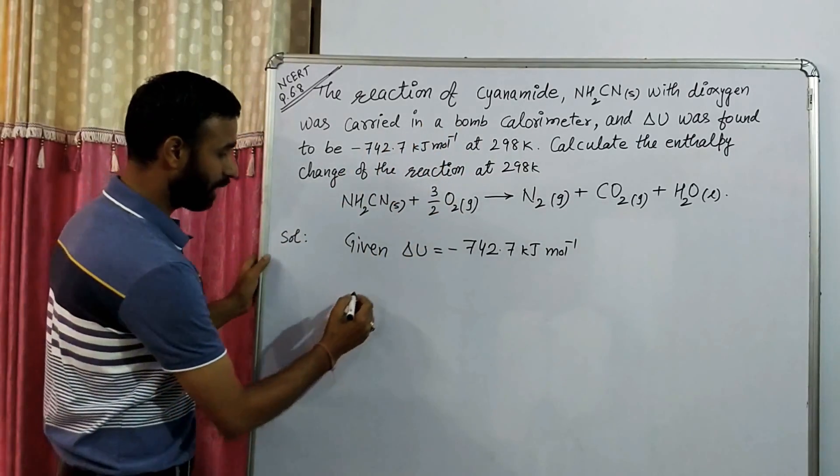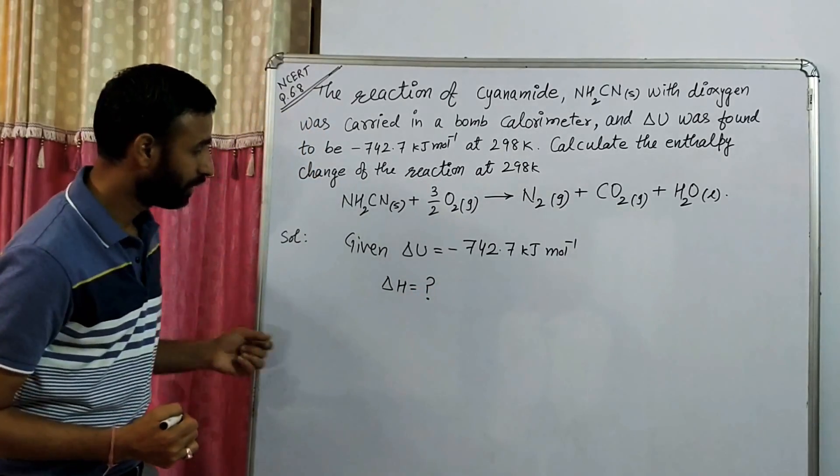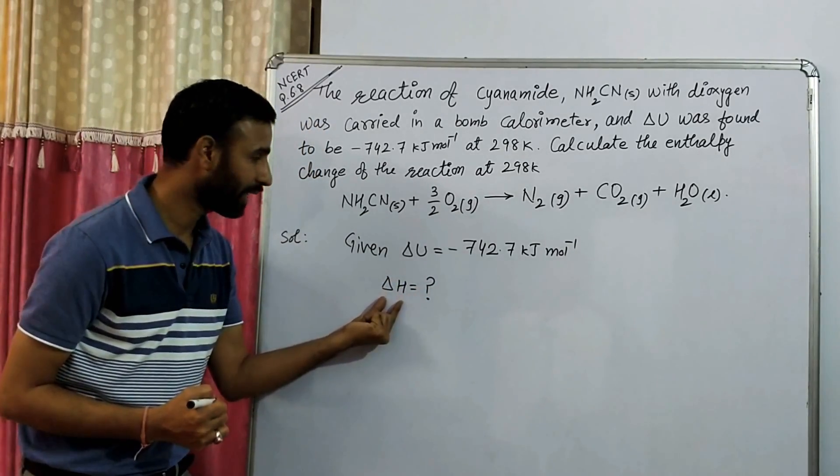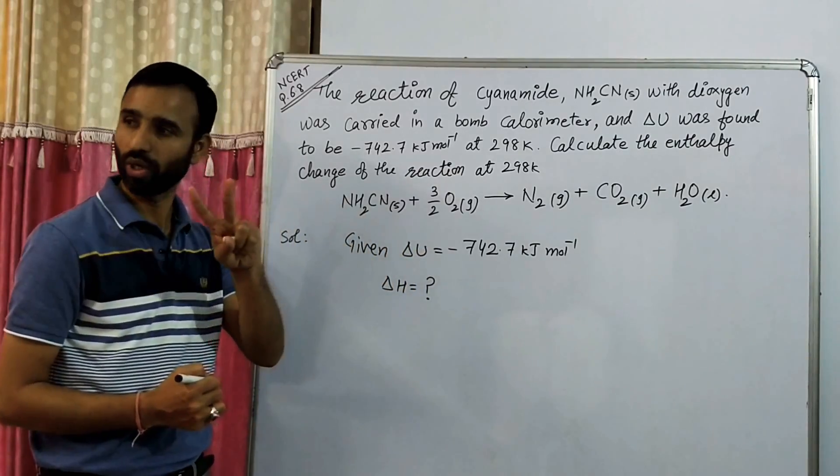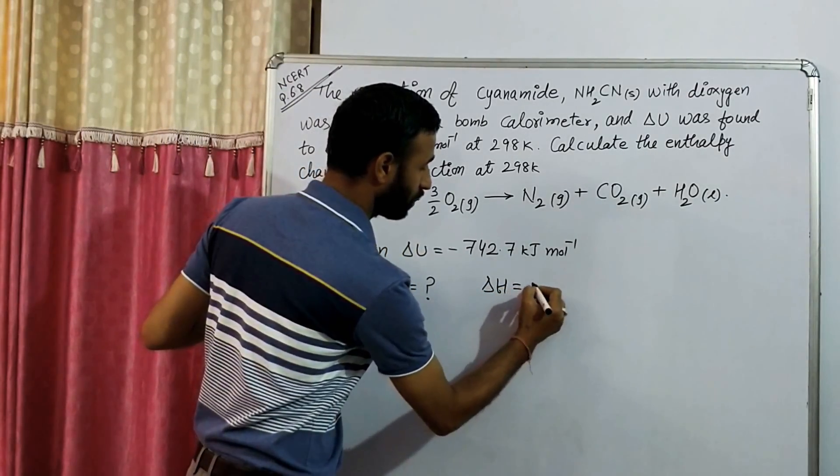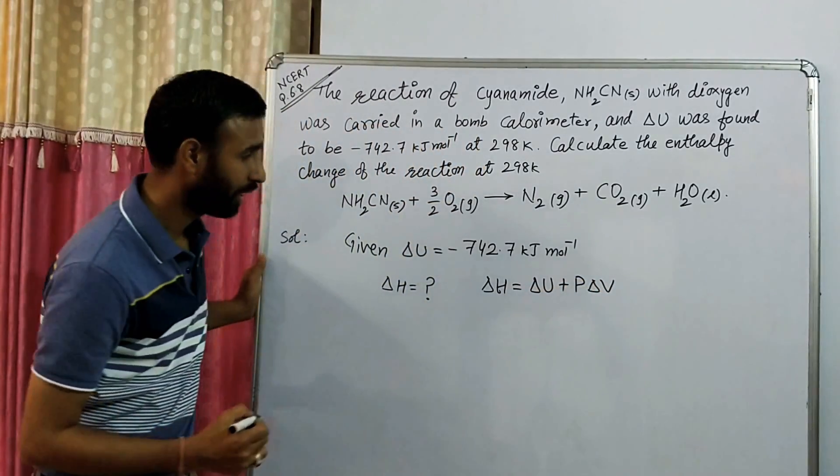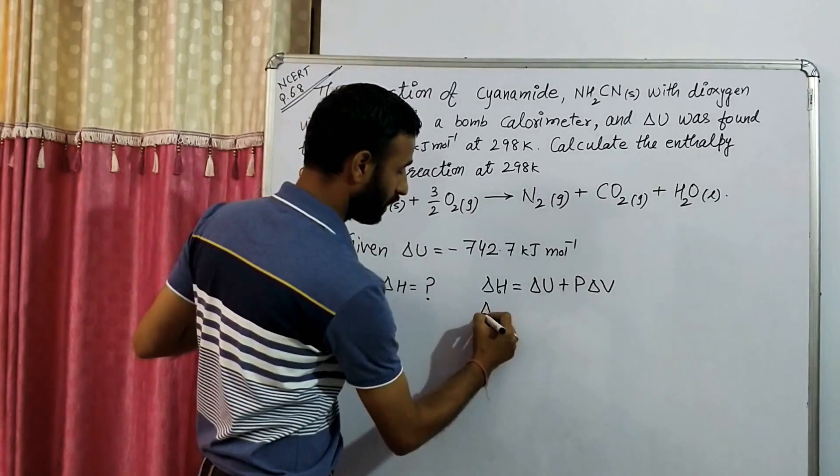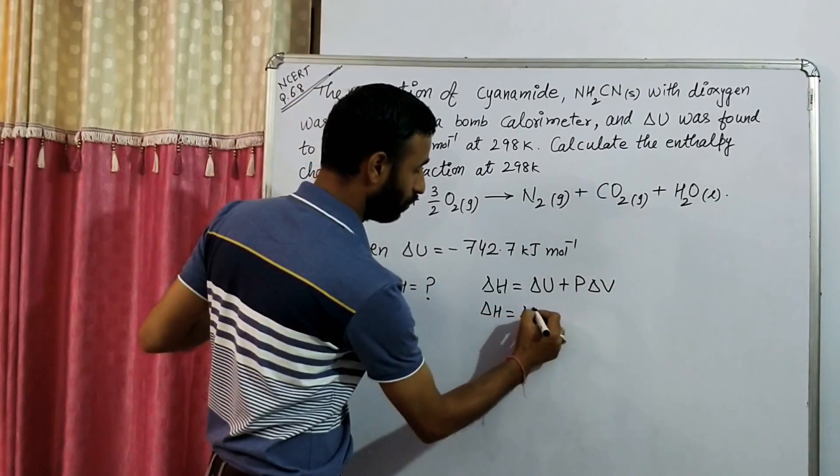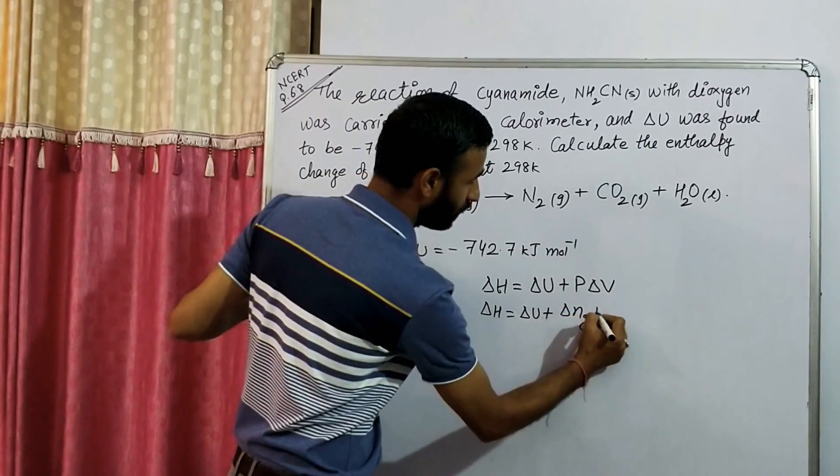So delta H we have to calculate. Now, what is the relation between delta H and delta U? There are two relations. First is delta H equals delta U plus P delta V, and the second relation is delta U plus delta Ng RT.